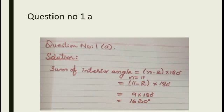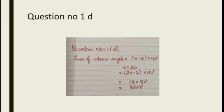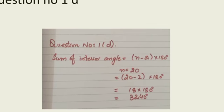After question number one part A, we have question number one part D. In part D we have 20 gons. Same formula: sum of interior angle is equal to (n minus 2) multiplied by 180 degrees.